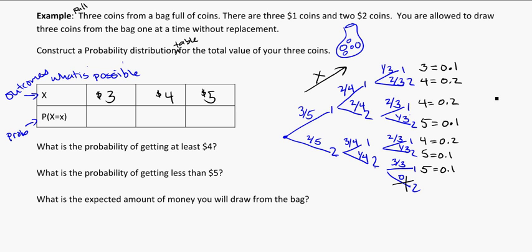And then remember with probability trees, if there's more than one option you want at the end, you add them up. So the probability of getting a $3 outcome, that only happens once, that's 0.1. The probability of getting a $4 outcome, that happens 1, 2, 3 times, so 0.2 plus 0.2 plus 0.2 is equal to 0.6. And for the $5 outcomes, 0.1, 0.1, 0.1 equals 0.3.